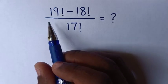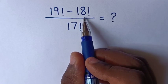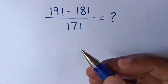Hello! How to solve 19 factorial minus 18 factorial over 17 factorial?